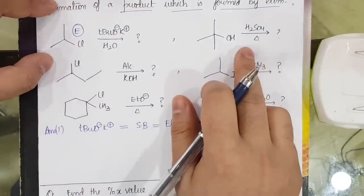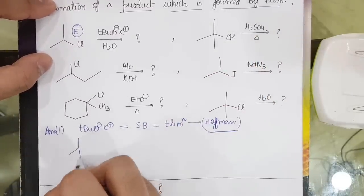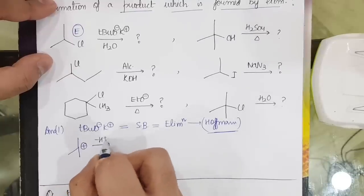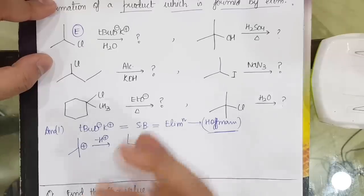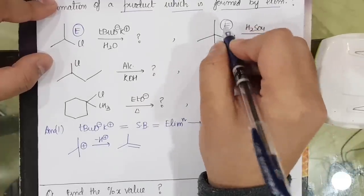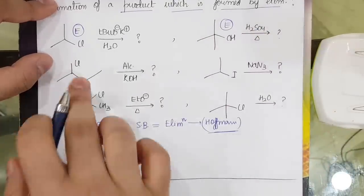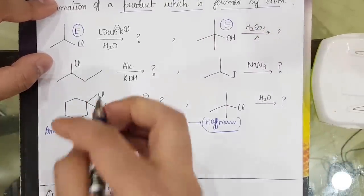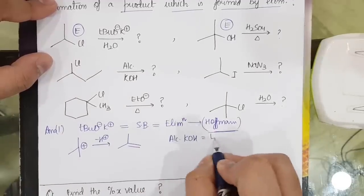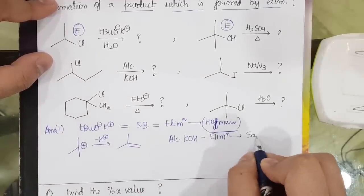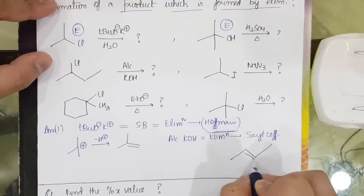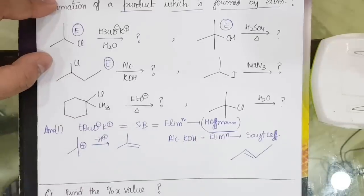In case two, a carbocation is formed which is already the most stable; then H+ is removed, giving a double bond — elimination of H2O has been done, so elimination occurs. In case three (alcoholic KOH), alcoholic KOH also does elimination — the Zaitsev type — so a trans alkene will be the major product, meaning elimination has been done in this case too.